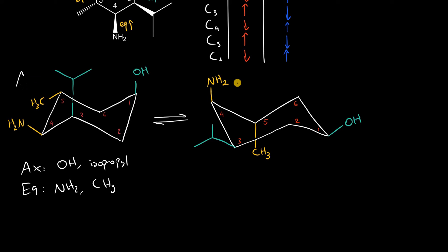So just like we did with conformer A, we can tally up what we have. So our axial substituents are now the methyl and amine group, and our equatorial substituents are now the ones that were previously axial, the OH and the isopropyl.